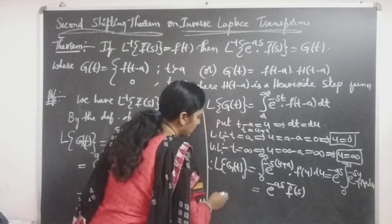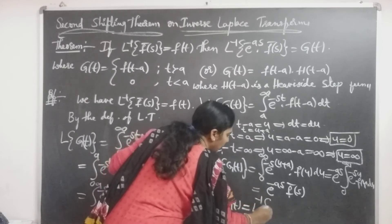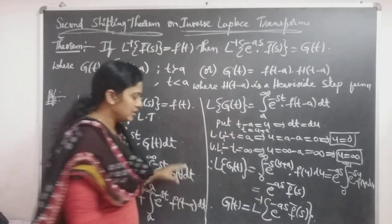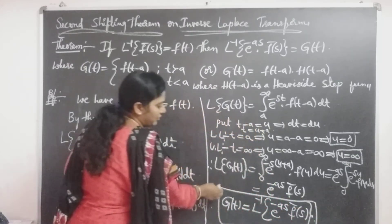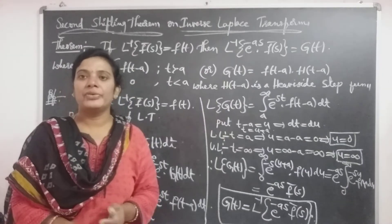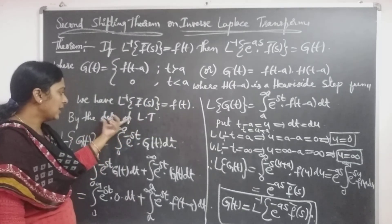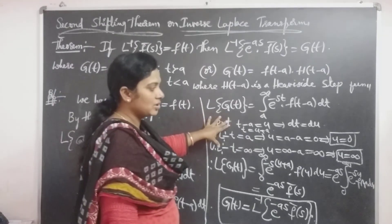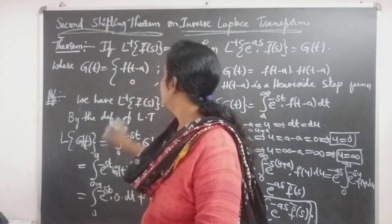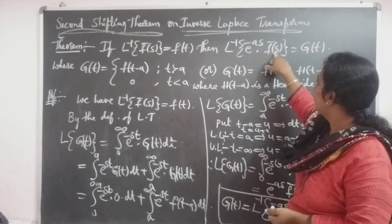That integral equals f-bar of s, so L of g of t equals e to the power minus a·s times f-bar of s. From this, g of t equals L inverse of e to the power minus a·s times f-bar of s. This is the second shifting theorem, confirming that L inverse of e to the power minus a·s times f-bar of s equals g of t. This is the proof of the second shifting theorem.